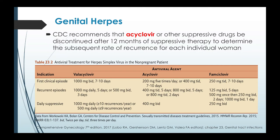Antiviral medication should be started as early as possible during the prodrome and within 24 hours of lesion appearance. The CDC recommends that acyclovir or other suppressive drugs be discontinued after 12 months of suppressive therapy to determine the subsequent rate of recurrence. There are three antiviral options: valacyclovir, acyclovir, or famciclovir. For the first clinical episode: valacyclovir 1000 mg BID for 7 to 10 days; acyclovir 200 mg five times a day or 400 mg TID for 7 to 10 days; and famciclovir 250 mg TID for 7 to 10 days, with different dosages for recurrent episodes and daily suppressive doses.